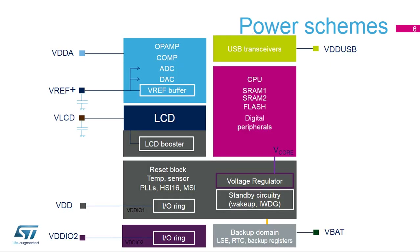STM32 devices have several independent power supplies which can be set at different voltages or tied together. The main power supply is VDD, supplying almost all I/Os except for 14 I/Os of port G. VDD also supplies the reset block, temperature sensor, and all internal clock sources. In addition, it supplies the standby circuitry, which includes the wake-up logic and independent watchdog. VDD supplies voltage regulators, which provide the V-Core supply. V-Core supplies most of the digital peripherals, SRAMs, and flash.